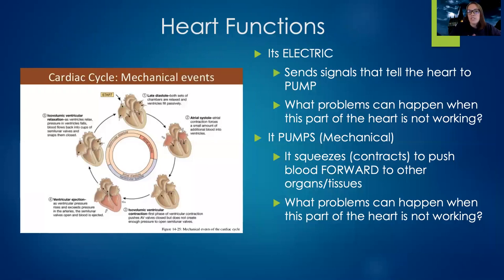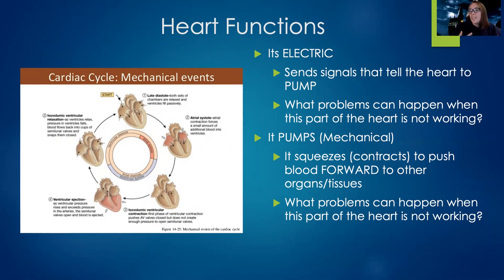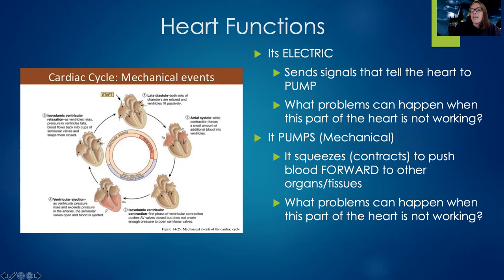Your heart has two main functions: electrical and mechanical. Electrically, it sends a signal telling itself it's time to pump. Mechanically, it has physical strength — it has to squeeze, or contract, to get the blood out. If the electrical signal is not working, like in dysrhythmias, it won't get the right signal to pump. If the mechanical function is impaired — even with a correct electrical signal — there's nothing to physically get the blood out. Electrical problems relate to dysrhythmias; mechanical problems relate to heart failure. If a patient has a heart attack, they can also lose muscle function if tissue dies.